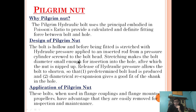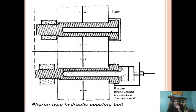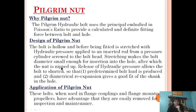Stretching makes the bolt diameter small enough for insertion into the hole, after which the nut is nipped up. Release of hydraulic pressure allows the bolt to shorten. First, a predetermined bolt load is produced. Second, diametric re-expansion gives a good fit. Poisson's ratio helps us determine the predetermined bolt load and also gives us the idea of the diametric re-expansion which provides a good fit.